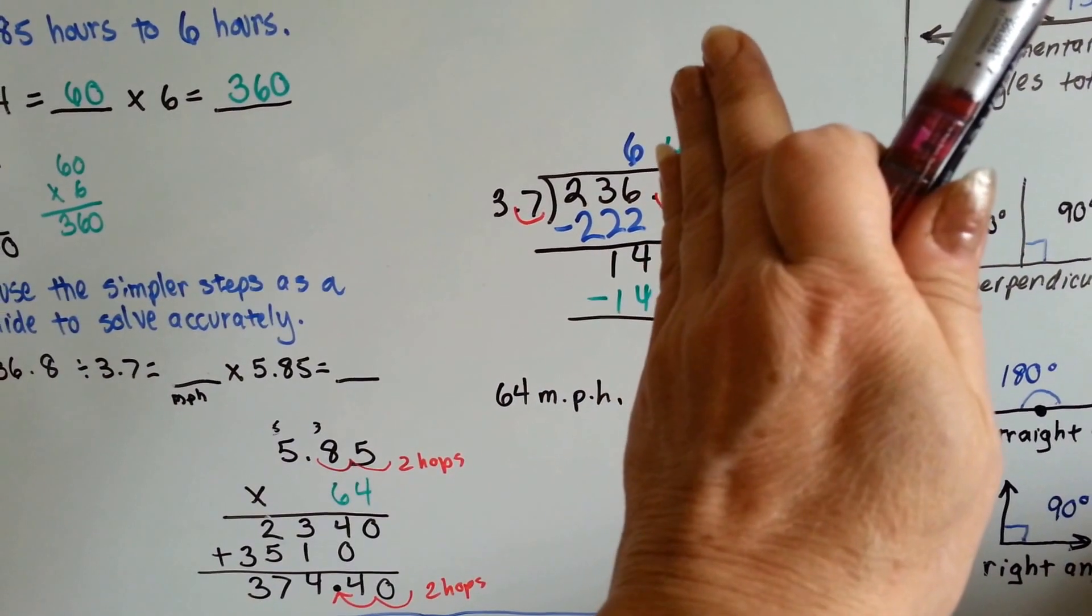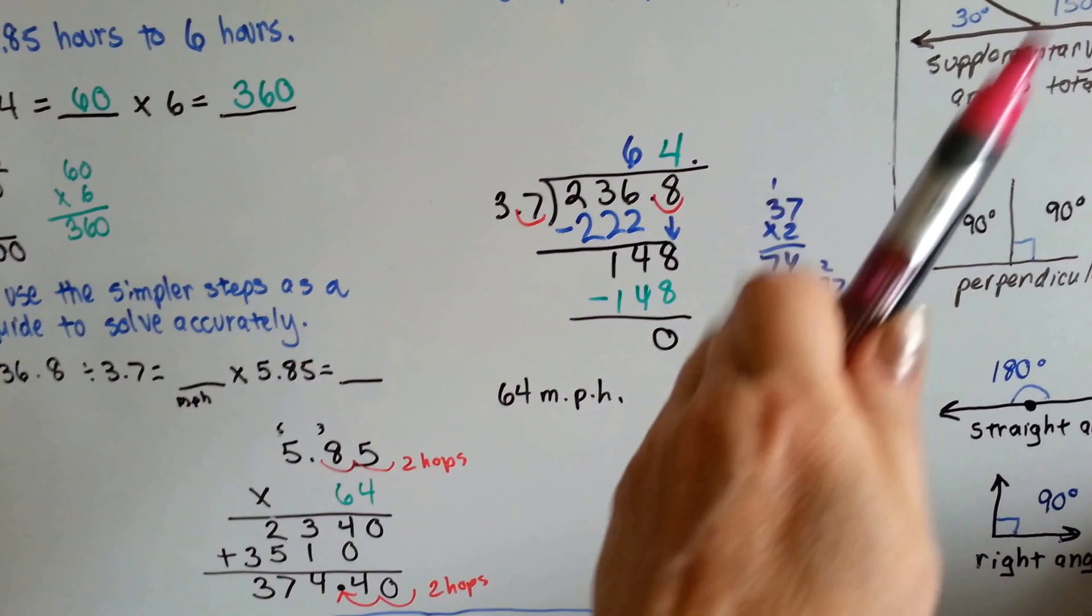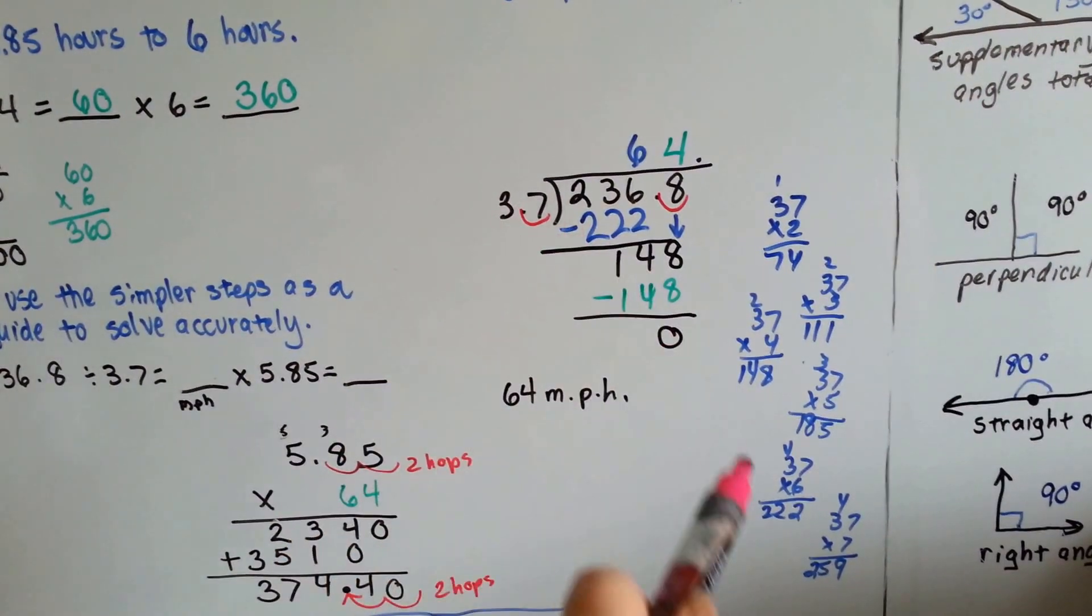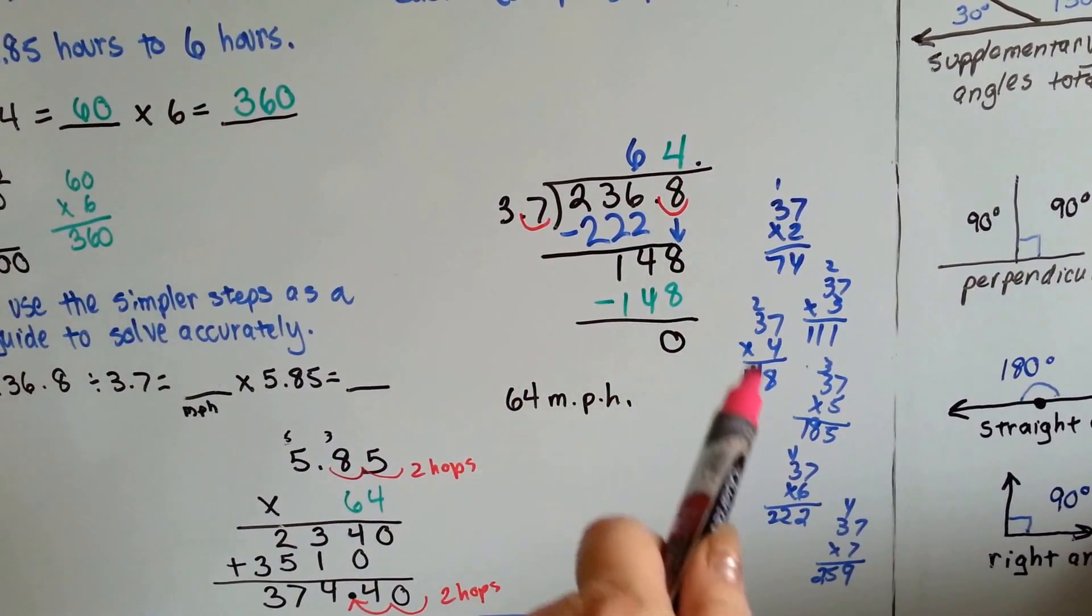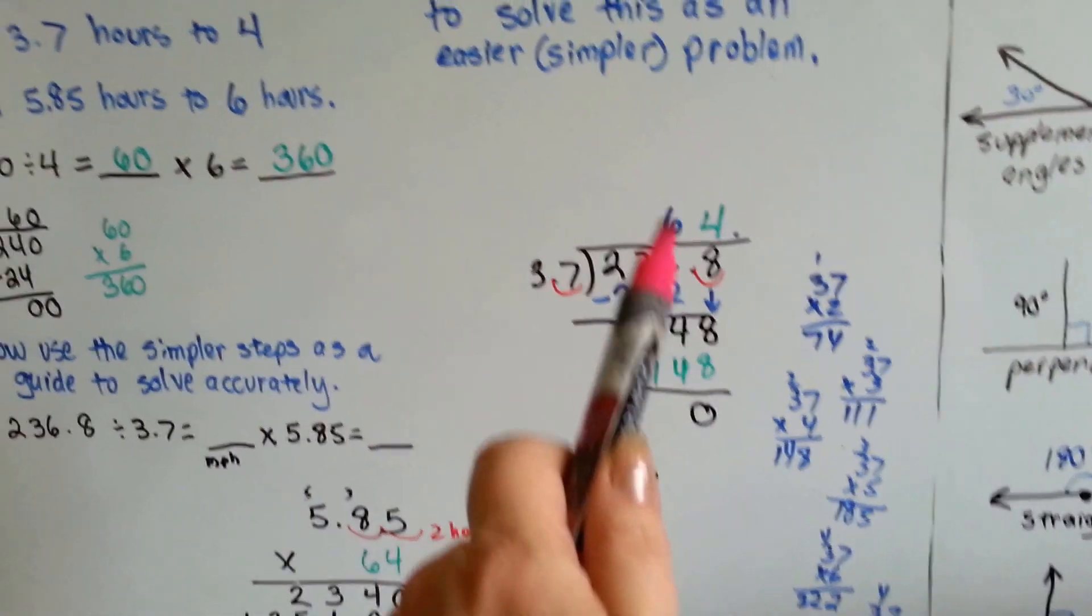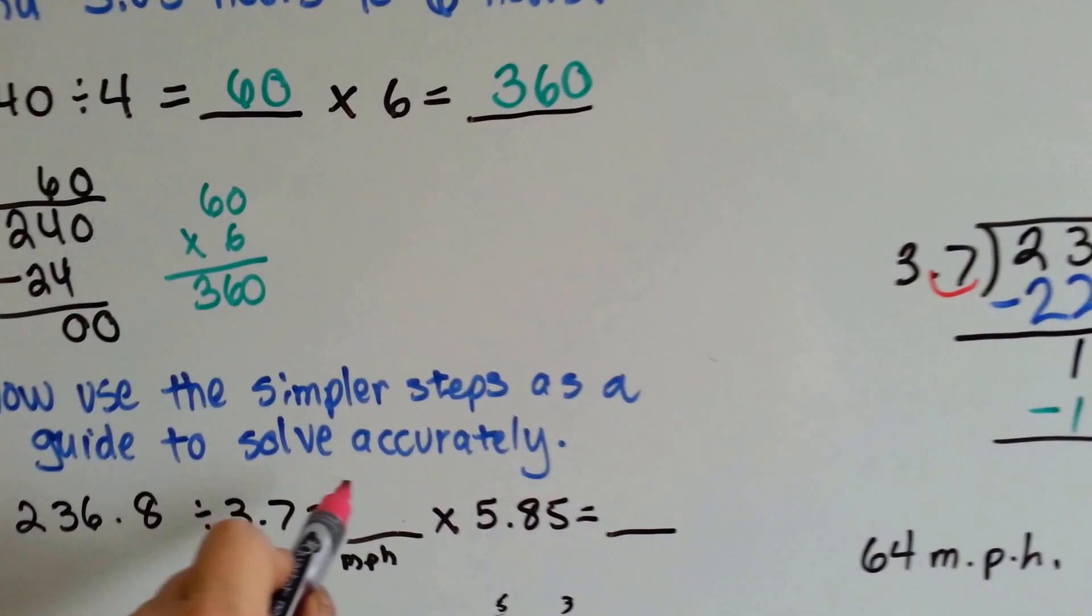It's the 8th turn to come down. 37 fits into 148. Look at that, 4 times perfectly. We do our subtraction and we know that she went 64 miles an hour.